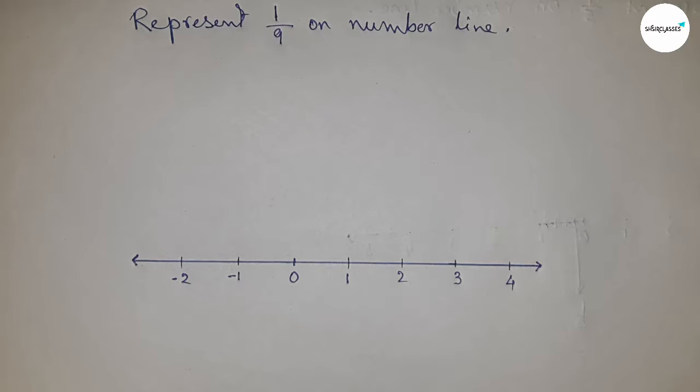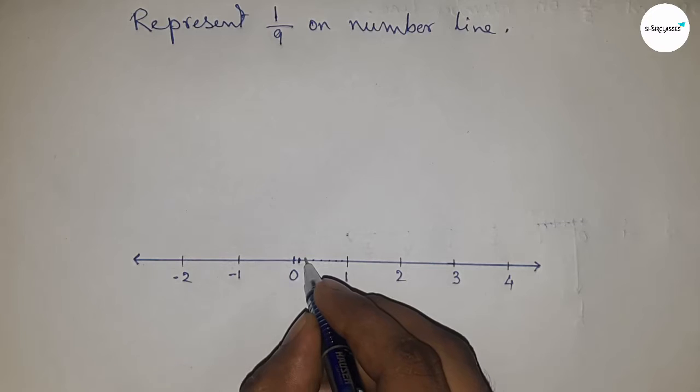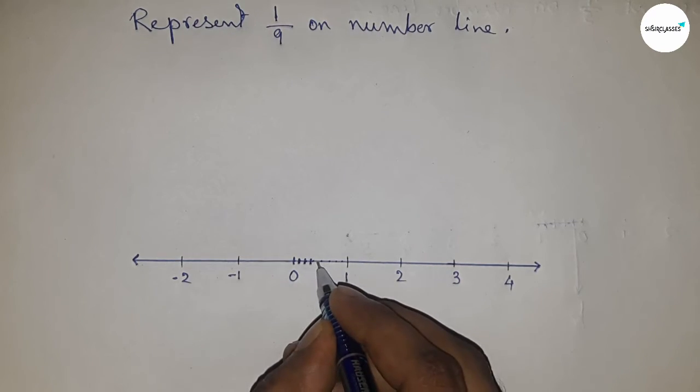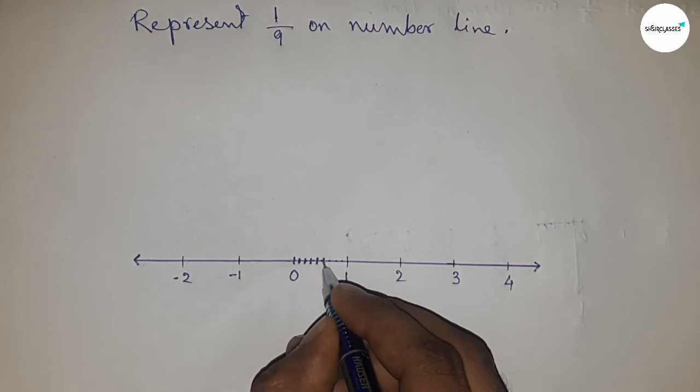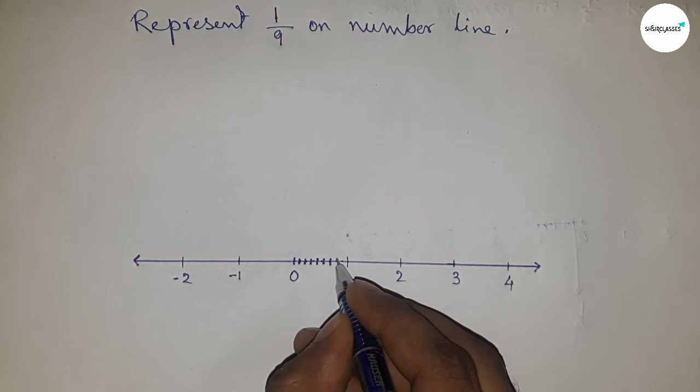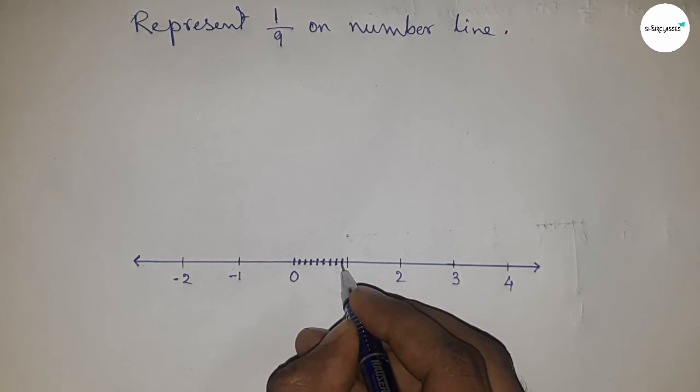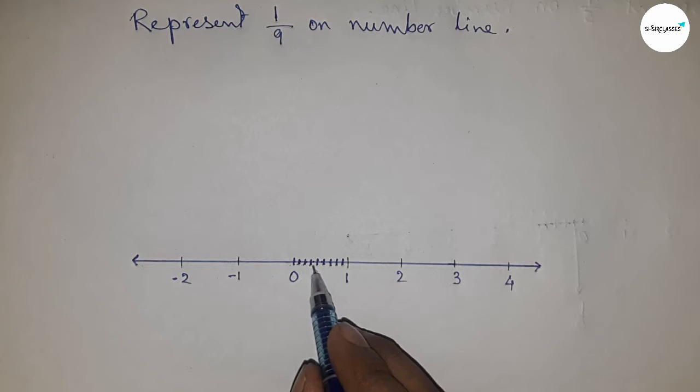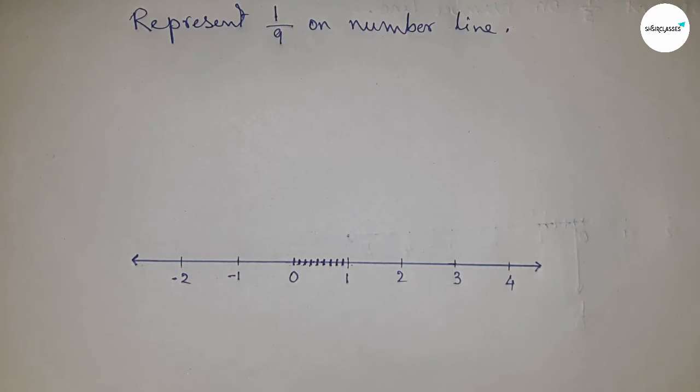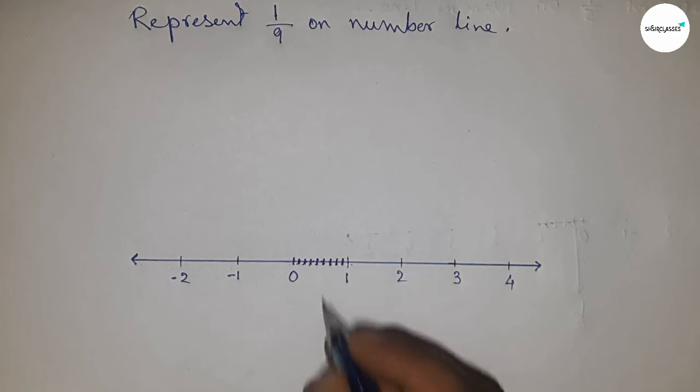Now divide the length between zero and one into nine equal parts. All lengths should be the same. This is the representation of 1/9 on a number line.